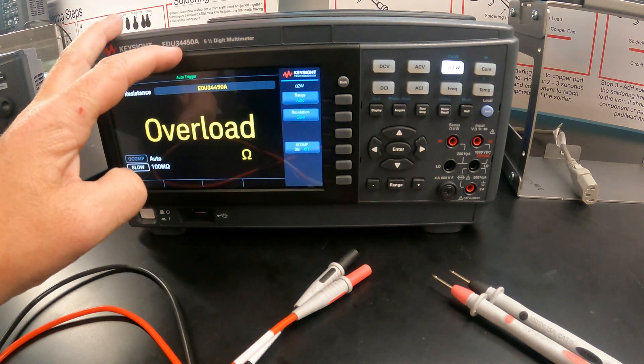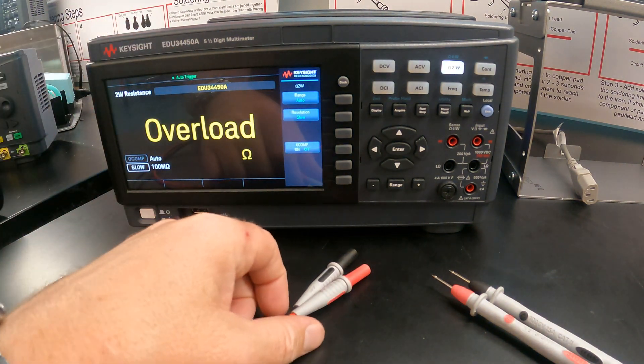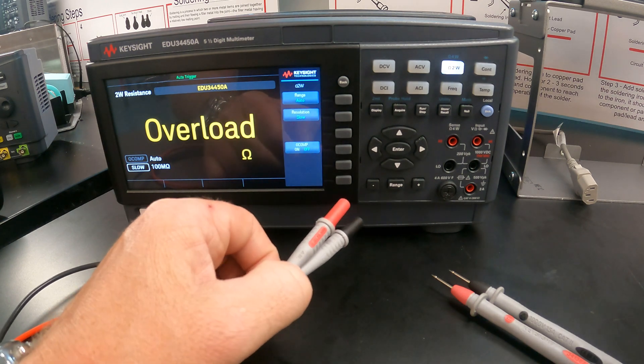Hey guys, back with the Agilent 344-50A multimeter, showing you how to take a continuity measurement.